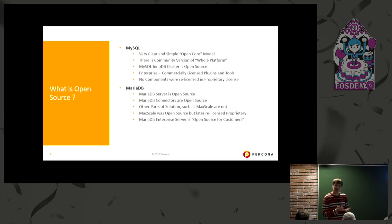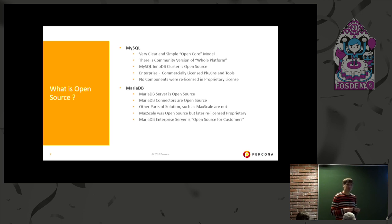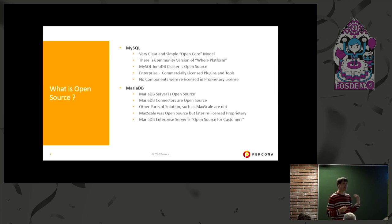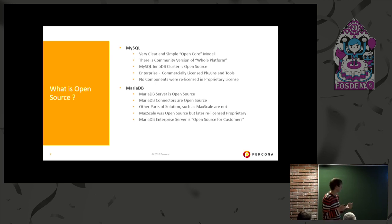Then there are some enterprise features as part of the enterprise platform. Enterprise is really focused on commercial license plugins and tools. I would say Oracle is actually doing a good job — not just for themselves but for third parties — by not having enterprise features baked into a separate source code, but instead having enterprise features as plugins, which allows third parties to implement similar functionality. Percona has implemented similar functionality for many enterprise options.